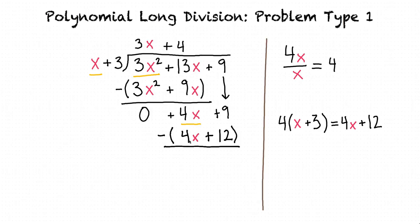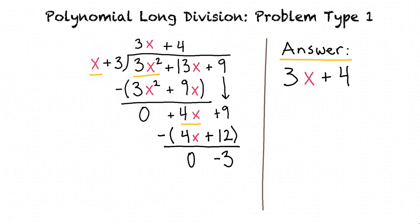And when we subtract that, we're left with 0 - 3. But what do we do now? We can't divide -3 by x. Right. So since we can't go any further, 3x + 4 is our answer, and -3 is our remainder.